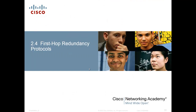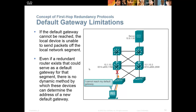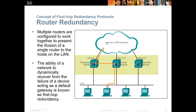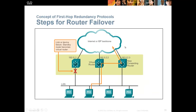First hop redundancy protocols are not covered on the CCNA, but they're introduced here. FHRPs allow us to have multiple default gateways in use so that if a link or router dies, we've got multiple paths. With multiple routers connected to the internet, we typically give out a virtual IP address that all routers respond to. They forward traffic to the forwarding router, and if the forwarding router dies, the standby router takes over and becomes the forwarding router. Companies typically have two internet connections from two different ISPs so traffic seamlessly switches over.